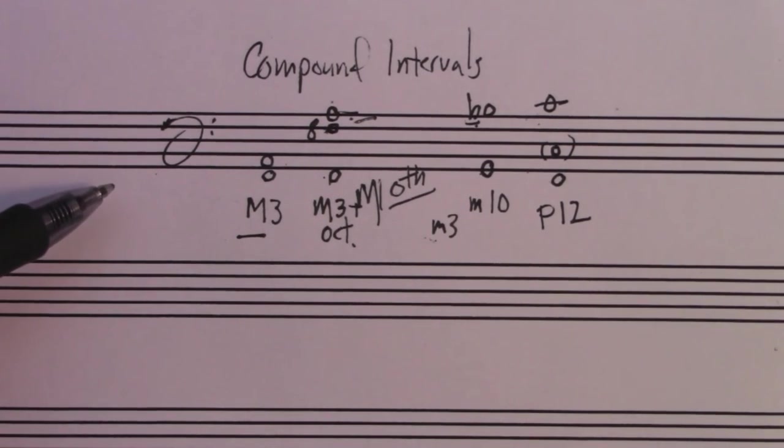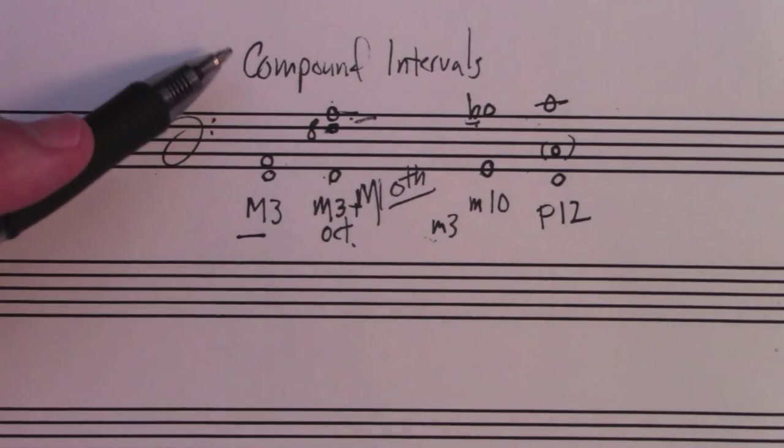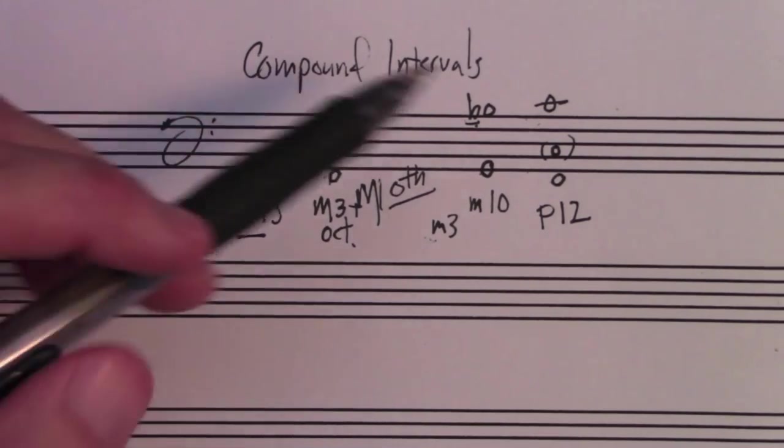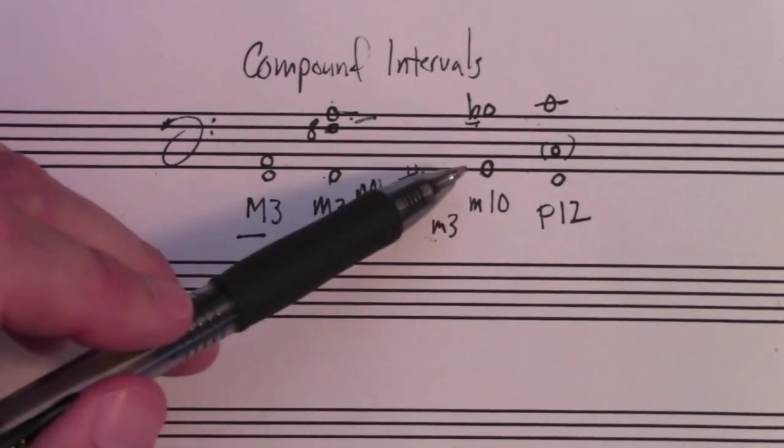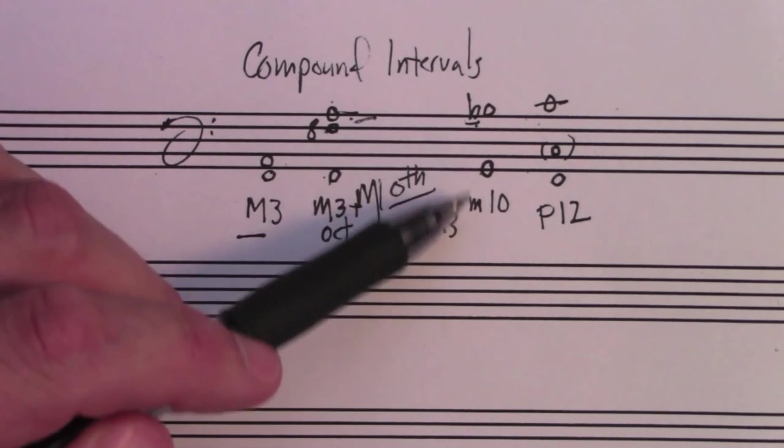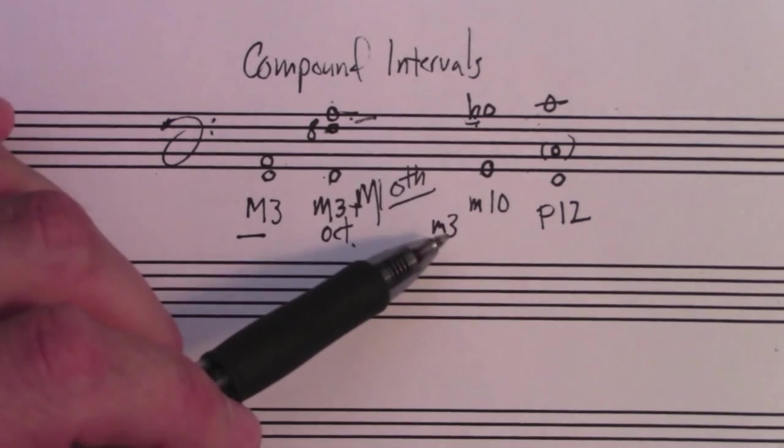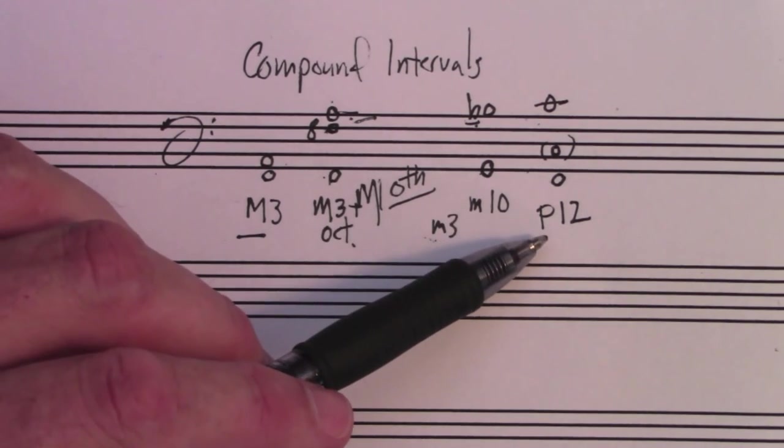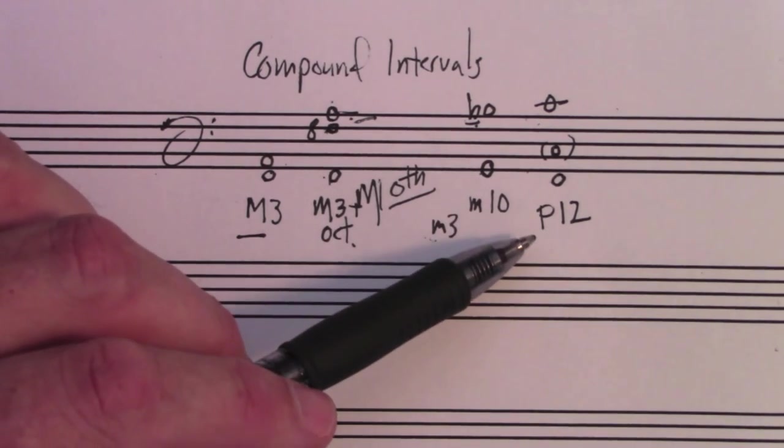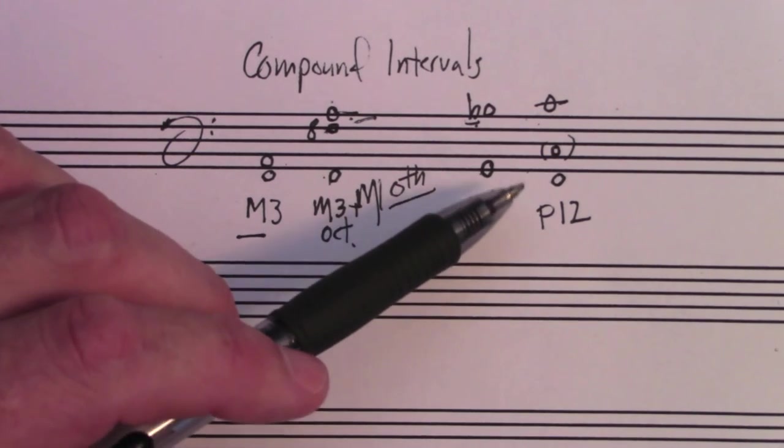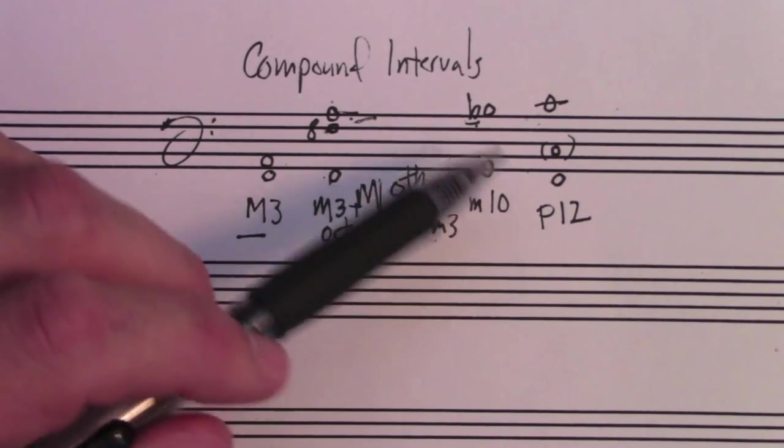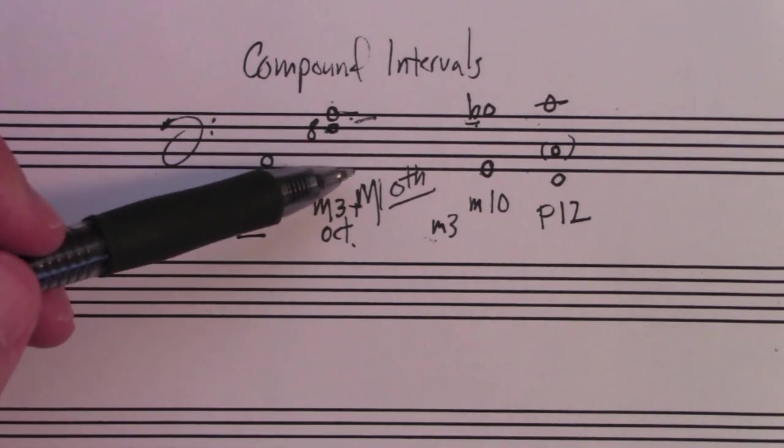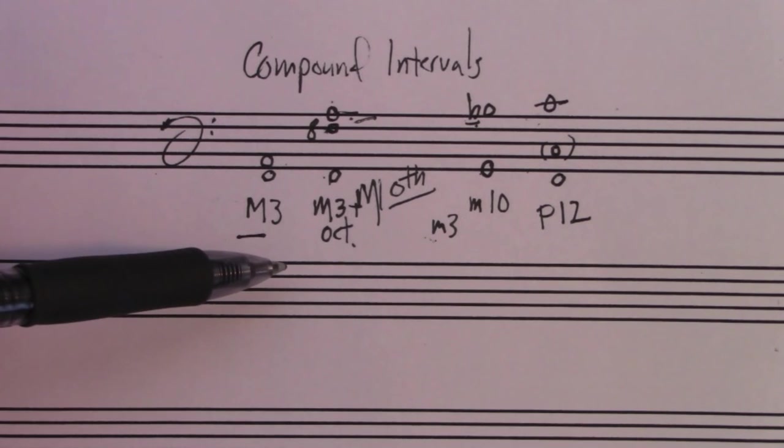Make sense? A compound interval is an interval plus an octave, and it's the same quality as the base interval. But we need to be able to refer to them both ways. So an octave and a third is a tenth. Octave and a fifth is a twelfth. You'll see these up to, probably thirteen is the most common highest number. Beyond that, people will mostly refer to them as intervals plus octaves. But that's all, that's all it is.